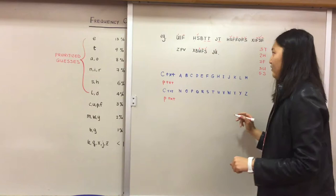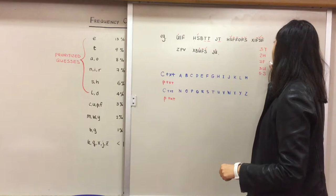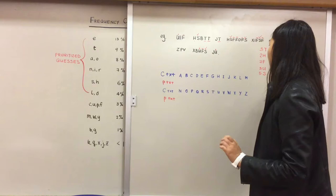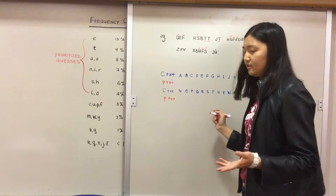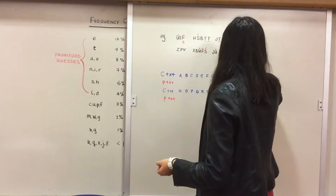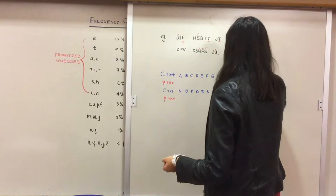So we can kind of start, I guess, by guessing based on those. So I'm going to take a wild guess and say that F is an E because it's the most frequent. There's just got to keep in mind that there's going to be a lot of erasing because this is basically trial and error. We're just making educated guesses over here.